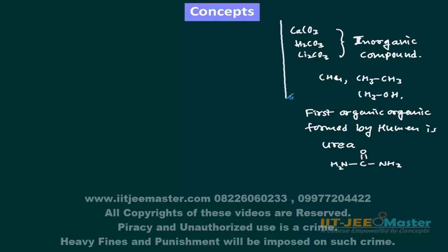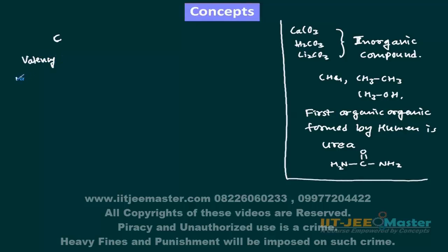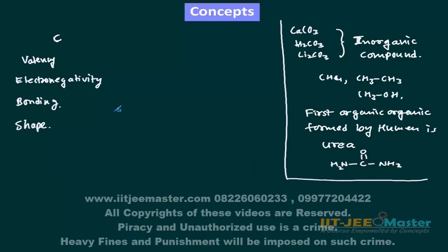So in organic chemistry, what are the things we have to study? Ultimately we have to study about the compounds of carbon. We will be studying about the valency of carbon, and we will be talking about the most important property of carbon — electronegativity. We will also be talking about bonding of carbon and the shapes of carbon compounds.